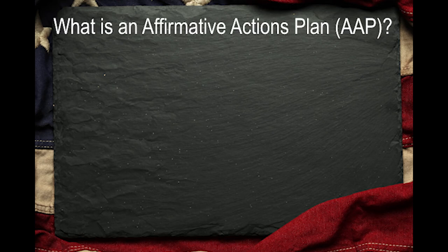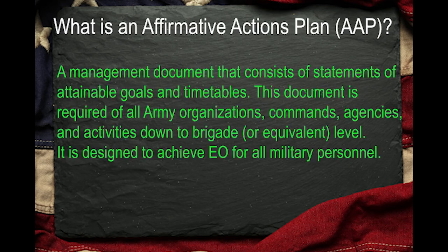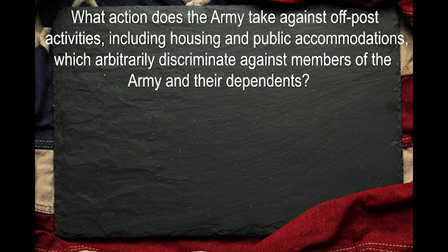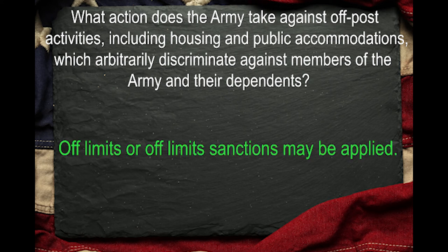What is an affirmative action plan? A management document that consists of statements of attainable goals and timetables. This document is required for all Army organizations, commands and agencies, and activities down to brigade level. It is designed to achieve EO for all military personnel. What action does the Army take against off-post activities including housing and public accommodations which arbitrarily discriminate against members of the Army and their dependents? Off-limits sanctions may be applied.